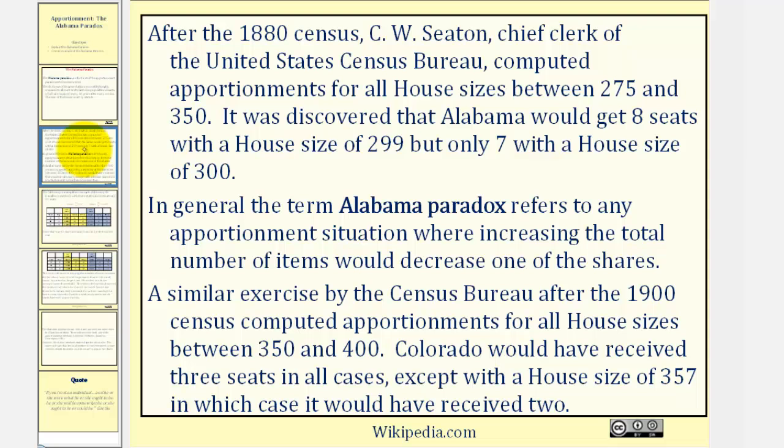After the 1880 census, C.W. Seaton, Chief Clerk of the United States Census Bureau, computed apportionments for all house sizes between 275 and 350. It was discovered that Alabama would get eight seats with a house size of 299, but only seven seats with a house size of 300.